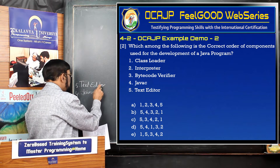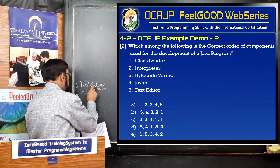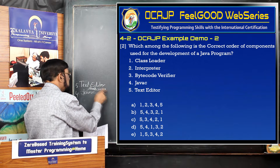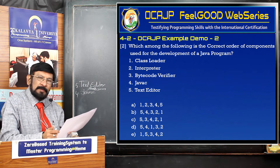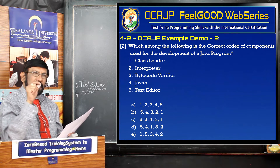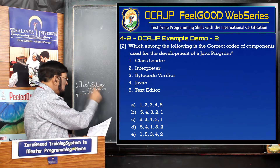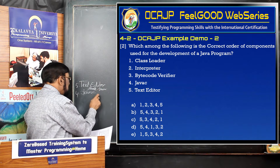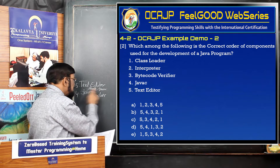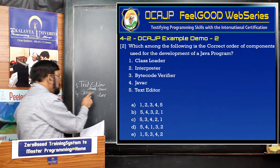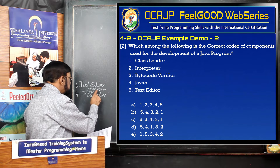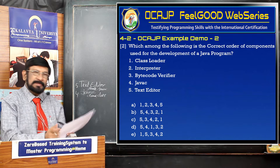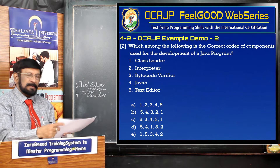The Java compiler takes the program - for example, demo2.java - and transforms it into demo2.class. That dot class program consists of not machine code, but bytecode - that means intermediary code. This is the fourth component.